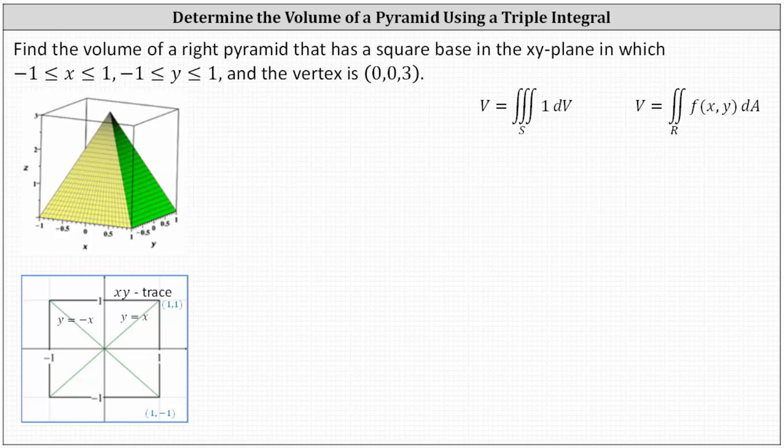Find the volume of a right pyramid that has a square base in the xy-plane in which both x and y are on the closed interval from negative one to one, and the vertex is (0, 0, 3).